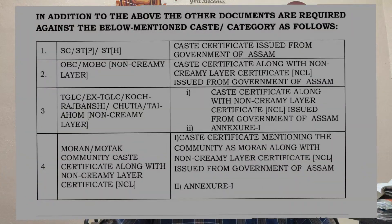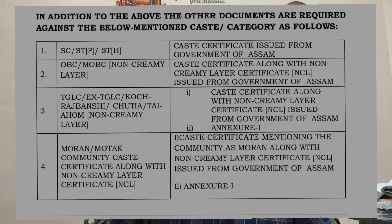There is a list of documents done here and in the corner where candidates can grab their documents. The card will be available to you for OBC, MoBC, and non-community. I will get the caste certificate from the screen — NCLR from the Government of Assam. NCLR is set for caste certificate.